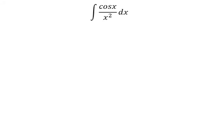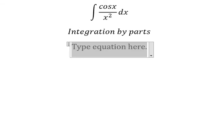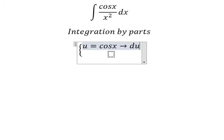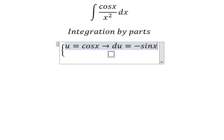We need to use integration by parts. So I will let u equal cos x. Then we take the first derivative of both sides, we have du equals negative sin x dx.